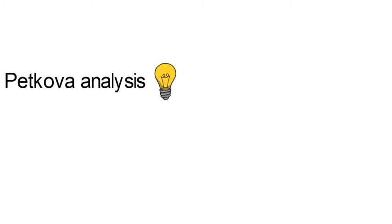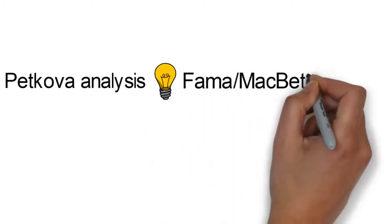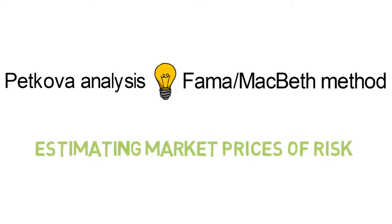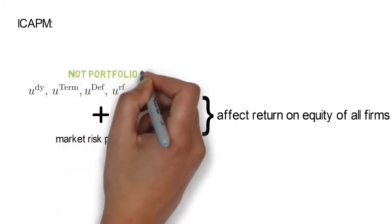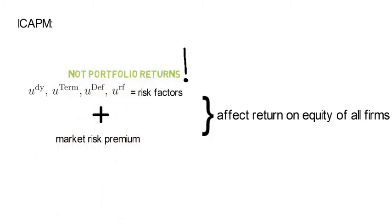So, we use the Petkova 2006 analysis as an example for understanding the Fama-MacBeth method for estimating market prices of risk. The ICAP-M suggests that the innovations u^DY, u^TERM, u^DEF and u^RF are risk factors, which in addition to the market risk premium affect the return on equity of all firms. Notice that these innovations are not portfolio returns. We therefore have to estimate the risk premium that investors require for exposure to these innovations explicitly.